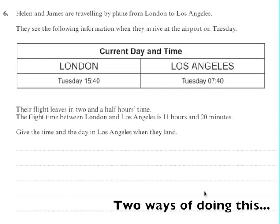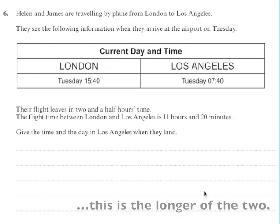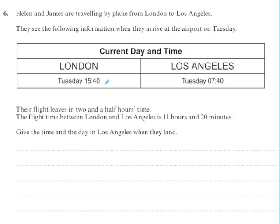Ellen and James are travelling by plane from London to Los Angeles. They see the following information when they arrive at the airport on Tuesday: it shows the time in London, which is where they are, and the current time in Los Angeles, which is on the same day but earlier. The flight leaves in two and a half hours time, and the flight time between London and Los Angeles is 11 hours and 20 minutes. Give the time and the day in Los Angeles when they land.